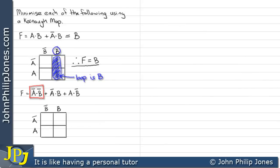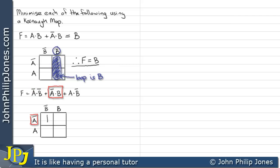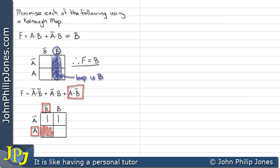For this example, we look at this minterm, and we can see we've got not A and not B, and that corresponds to this area here. Consequently, we'll put a 1 in that area. We'll now look at this particular minterm, and we can see we've got not A and B, which corresponds to this area, so we'll put a 1 here. Now we'll consider this minterm, which is A and not B, which corresponds to this particular area here, so we will plot a 1 there.